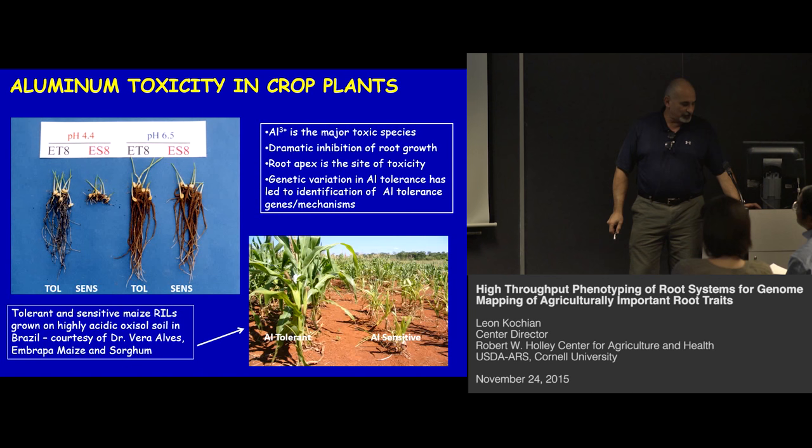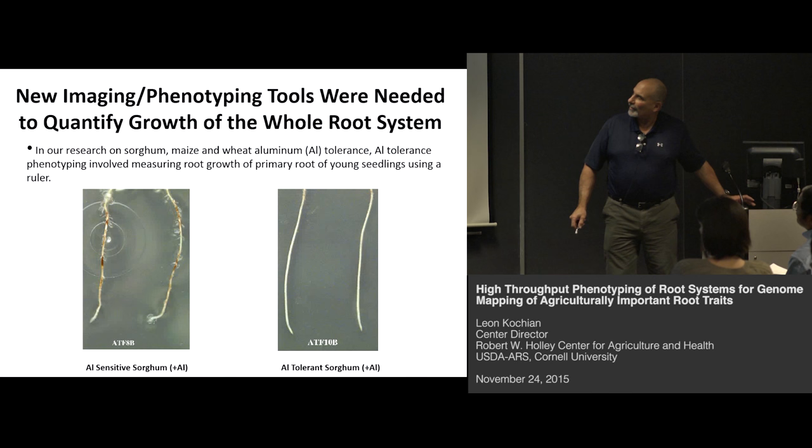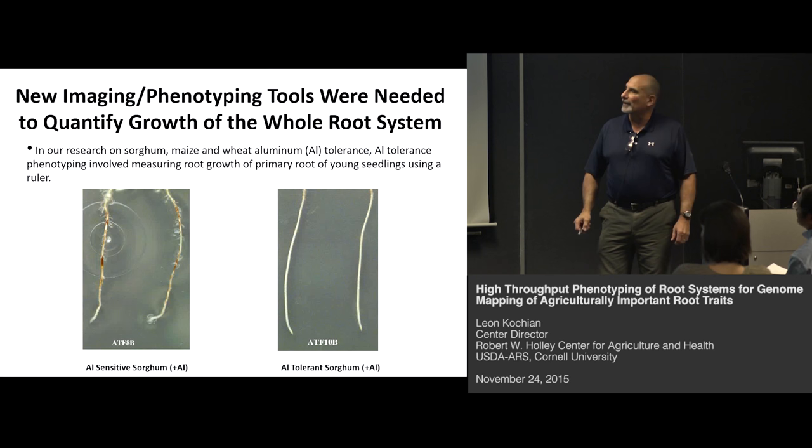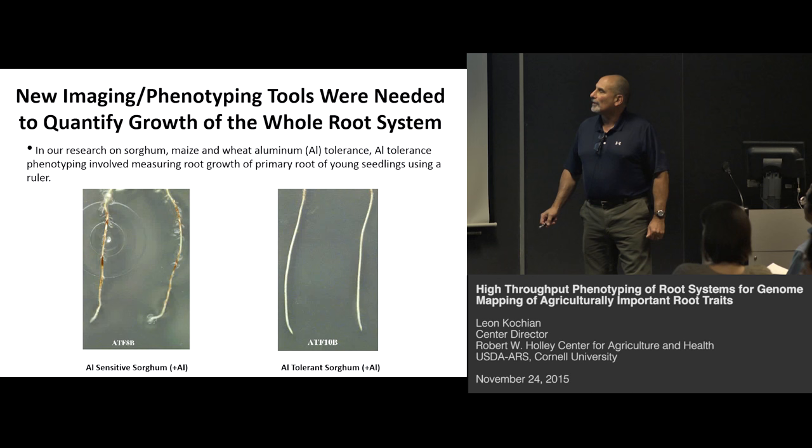For a long time, we quantified root growth by measuring the longest root on about a five-day-old seedling with a ruler — here's some tolerant and sensitive sorghum roots. Juringer Megreis, one of my PhD students and now a long-time collaborator, worked with this approach. We were able to map and base-clone the first gene in sorghum, the major aluminum tolerance gene SB-MATE, but the approach is pretty crude.